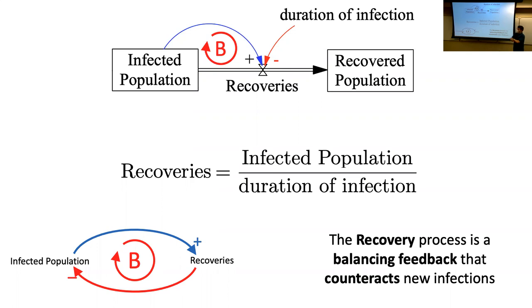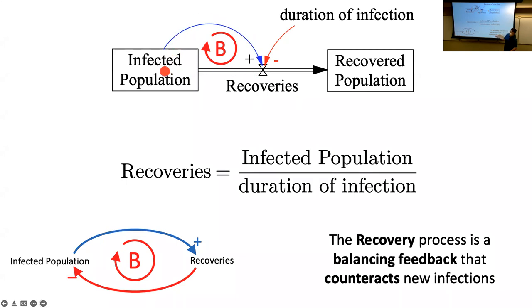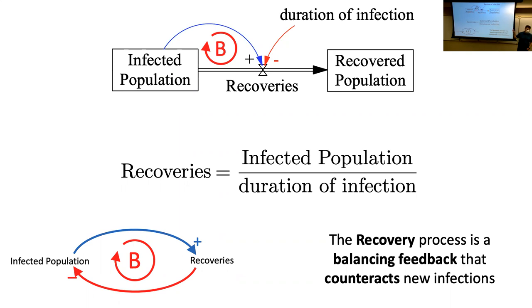Formally, you do need to draw that link from infected population to recoveries. Some software packages give you access to it automatically because there's already an outflow from it — Insight Maker might do this. But because we want to be clear to a general audience who understands generic stock-and-flow diagrams, you should always draw this link to show that recoveries depend upon the number of infected. Any questions? This is the easy half of the diagram.